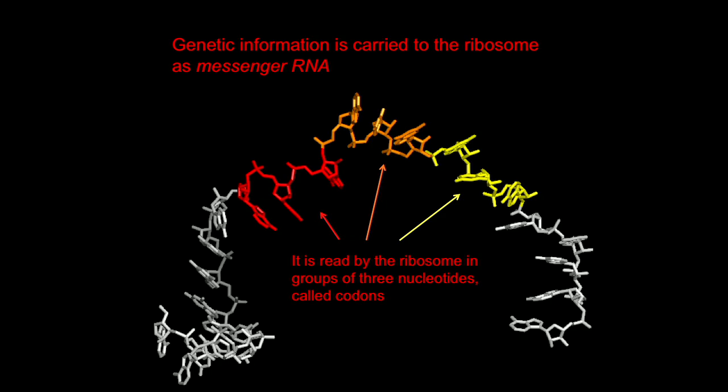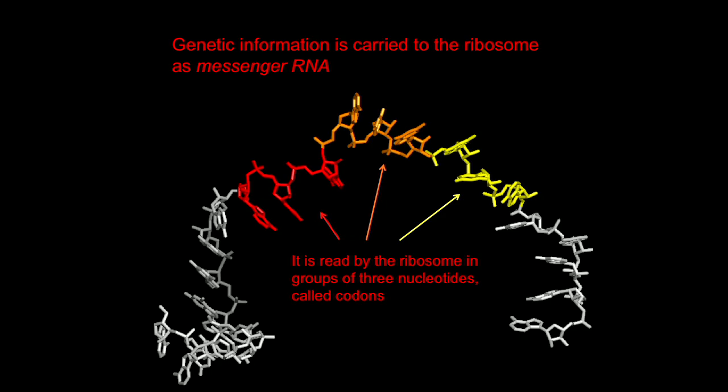The messenger RNA is held in a single-stranded form inside the ribosome and is read in groups of three nucleotides as codons. The interpreter is the tRNA, which at one end reads the codons by base pairing with the anticodon — these three nucleotides at the bottom. At the opposite end, amino acids, or the growing peptidyl chain of the protein, are attached.